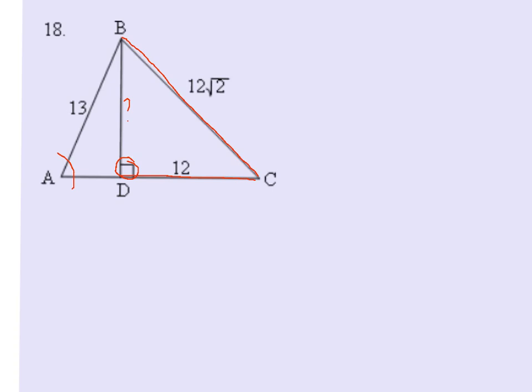But much quicker would be to recognize that this is a special right triangle. If you look at triangle BDC and recognize that DC is 12 and BC is 12 root 2, this has to be a 45-45-90 triangle. So if DC is 12, that means BD also has to be 12. Again, you should get the same answer if you do Pythagorean theorem, it just takes a little bit longer.